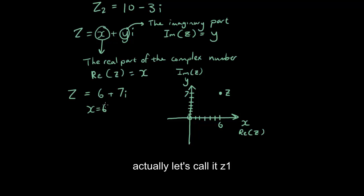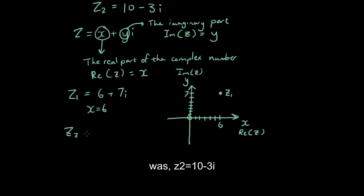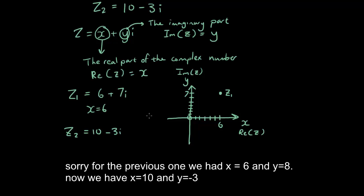Actually let's call it z1 and now let's find z2. So, z2 which we defined previously was z2 equals 10 minus 3i. So sorry for the previous one we had x equals 6, y equals 7. Now we have x equals 10, y equals negative 3.